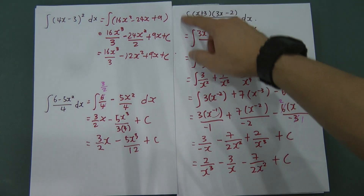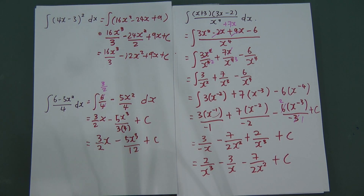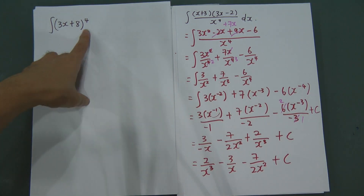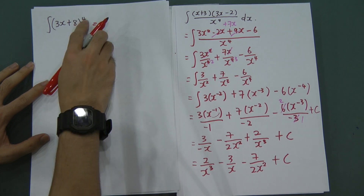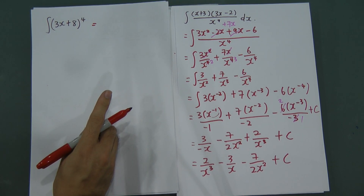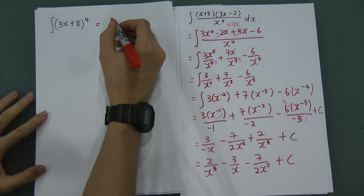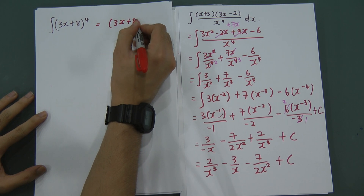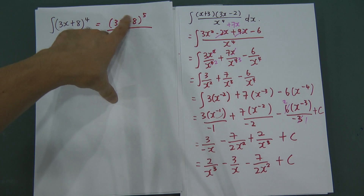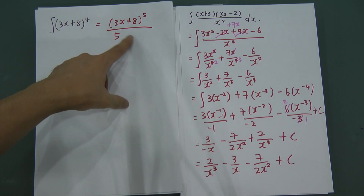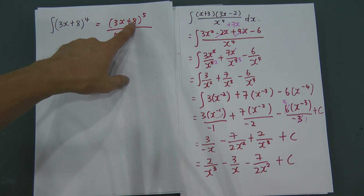Now if you have something like a high power that's hard to expand — for example (3x + 8)⁴ — it would take too long to expand four times. Instead, use the reverse chain rule: add 1 to the power to get (3x + 8)⁵, divide by 5, then differentiate the inside function (3x + 8), which gives 3. Put the 3 on the bottom.